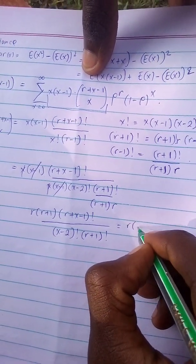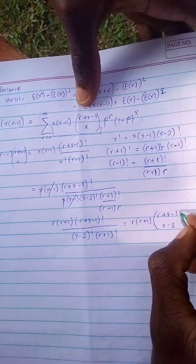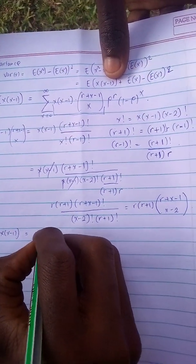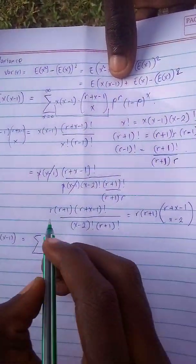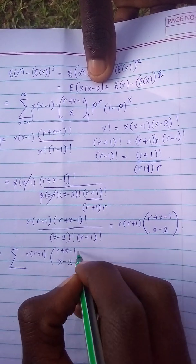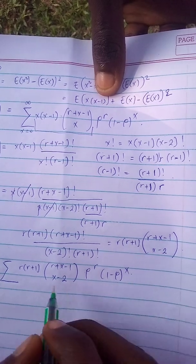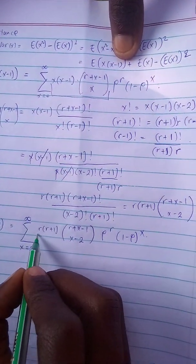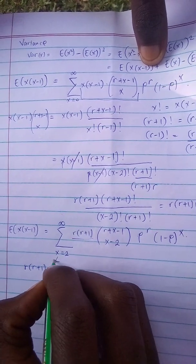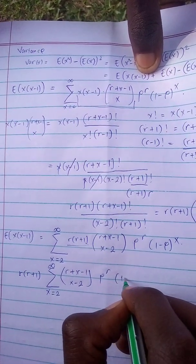This simplifies to R(R+1) · C(R+x-1, x-2) · P^R · (1-P)^x, summing from x=2 to infinity. We pull out R(R+1) as a constant. So we have R(R+1) times the summation from x=2 to infinity of C(R+x-1, x-2) · P^R · (1-P)^x.